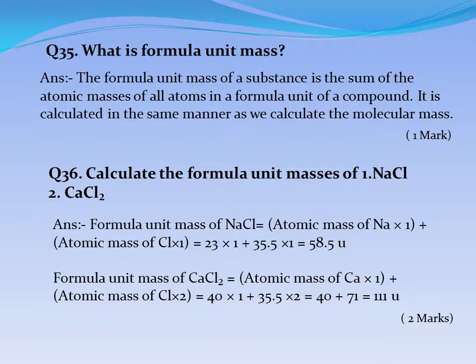Question No. 36: Calculate the formula unit mass of NaCl and CaCl2. Answer: Formula unit mass of NaCl = (23×1) + (35.5×1) = 58.5U. Formula unit mass of CaCl2 = (40×1) + (35.5×2) = 40 + 71 = 111U.